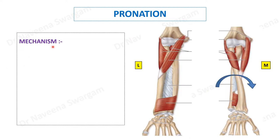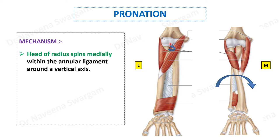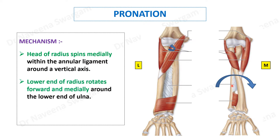Mechanism of action: during pronation, the radius actively rotates around the ulna. The head of the radius spins medially within the annular ligament around a vertical axis. Meanwhile, the lower end of the radius rotates forwards and medially around the lower end of the ulna, which also slightly rotates backwards and laterally, so that the fibrous bands of the interosseous membrane get spiralized.